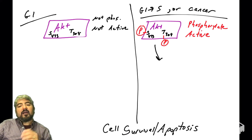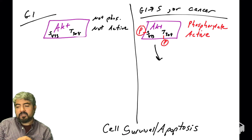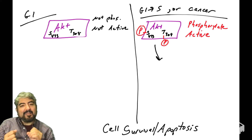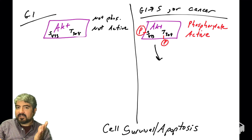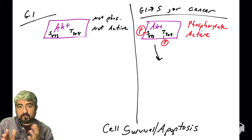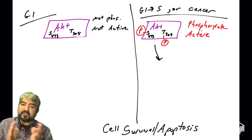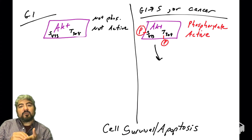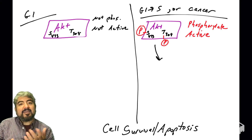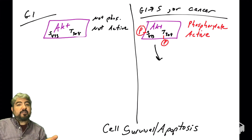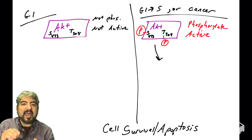Let's start with cell survival or apoptosis — programmed cell death. We know that when cells are in G1, AKT is typically not phosphorylated and therefore not in an active state. It's a kinase, but it's not active. When cells are getting a signal to go through the cell cycle, AKT is typically phosphorylated on serine 473 and threonine 308, which helps trigger the activation of AKT's kinase activity so it can phosphorylate its substrates.